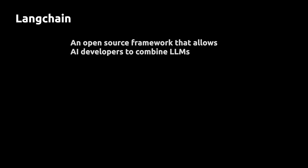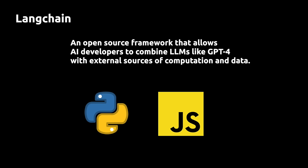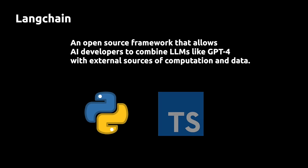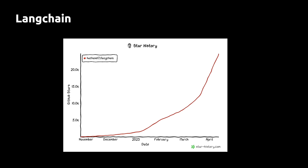LangChain is an open source framework that allows developers working with AI to combine large language models like GPT-4 with external sources of computation and data. The framework is currently offered as a Python or a JavaScript package, TypeScript to be specific. In this video we're going to start unpacking the Python framework and see why the popularity of the framework is exploding right now, especially after the introduction of GPT-4 in March 2023.